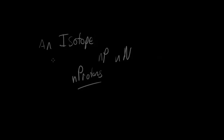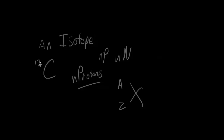Isotopes differ in that they have different numbers of neutrons, and we represent this using the notation from before — specifically the number A at the top. Sometimes we don't actually include Z because from the elemental symbol X we can look at the periodic table and know what Z is. For example, carbon-13 would be written as ¹³C, and on the periodic table we usually see carbon-12 as the most common isotope — I'll go into that in a different video.